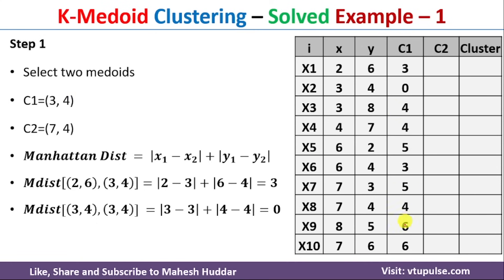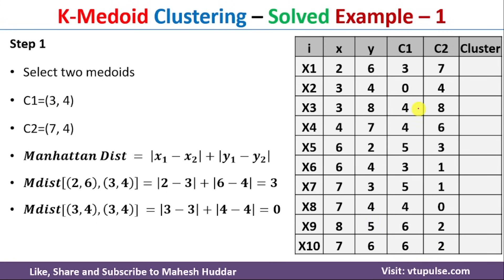Once all distances to C1 are calculated, we repeat the same process for the second medoid C2=(7,4). After computing distances from all data points to both medoids, we assign each data point to the nearest cluster. Comparing distances 3 and 7 for data point (2,6), since 3 is smaller and corresponds to C1, we assign (2,6) to C1. For (3,4), comparing 0 and 4, 0 is smaller, so (3,4) is assigned to C1.